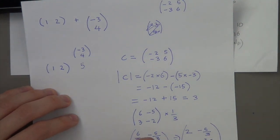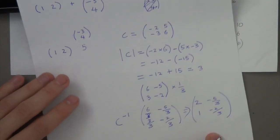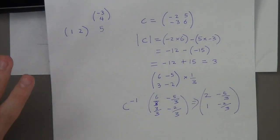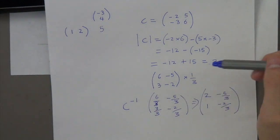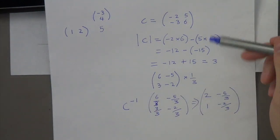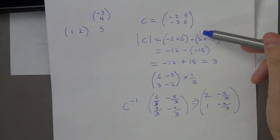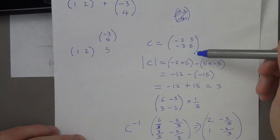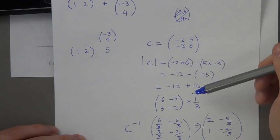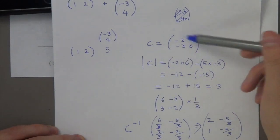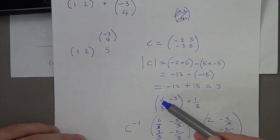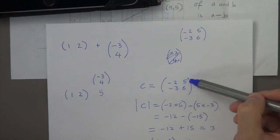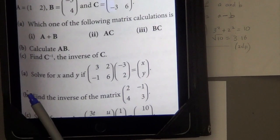So this is C inverse. Pause the video to check what I've done and remember these rules: first, find the determinant — that diagonal minus that diagonal. Then with the original matrix, switch those two numbers, and times minus 1 to the other two.